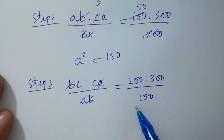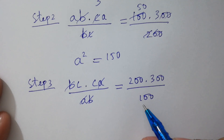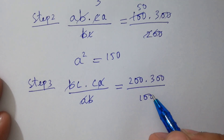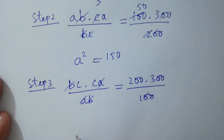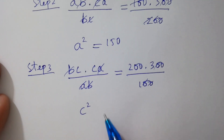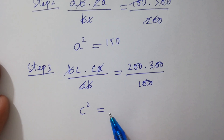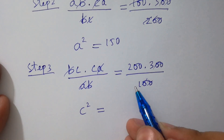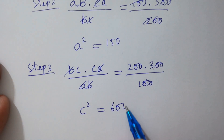Here a and a will be cancelled. We get c² = 200 × 3 = 600.